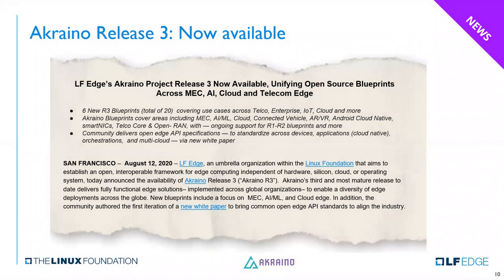Akraino Blueprint Release 3 — there was a PR announcement on August 12th. We have six new R3 blueprints, a total of 20, covering use cases all the way across from telco, enterprise cloud, IoT, etc. This blueprint covers many areas including MEC, AI, machine learning, cloud, connected vehicle, VR, Android cloud native, SmartNIC, Android cloud native for cloud gaming, telco core, and OpenRAN, with ongoing support of R1 and R2 blueprints. We have open edge API specifications to standardize across devices, applications, cloud-native orchestration, and multi-cloud.